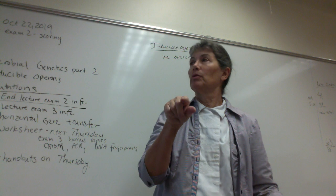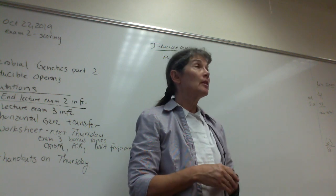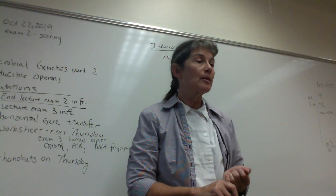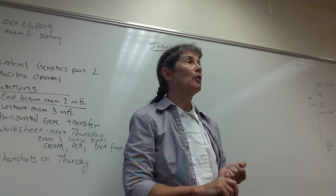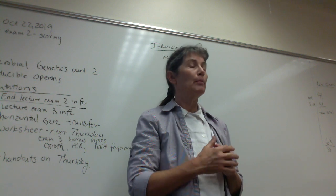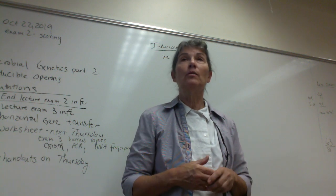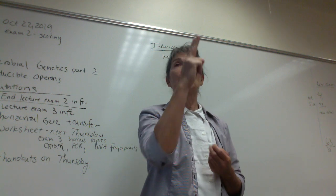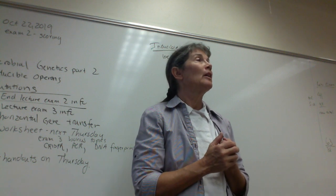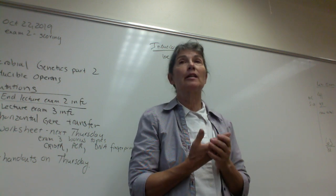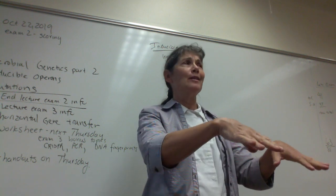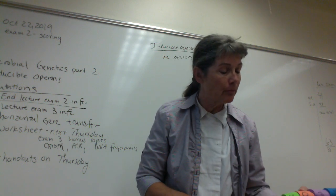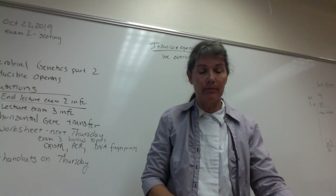Now let's talk about what happens when lactose is present. Lactose is a wonderful energy and carbon source — it's a disaccharide made up of glucose covalently linked to galactose via a glycosidic bond. To use lactose as a carbon and energy source, you must first hydrolyze that glycosidic bond. In humans we call the enzyme lactase; in bacteria the fancy term is beta-galactosidase, which is the protein encoded by the lac Z gene.